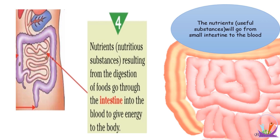After the stomach, the food will go into the small intestine. In the small intestine, the food will complete its digestion and the nutrients will be formed. The nutrients will then go from the small intestine into the blood and then to all organs of your body.